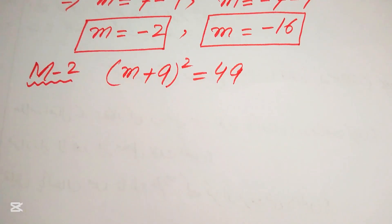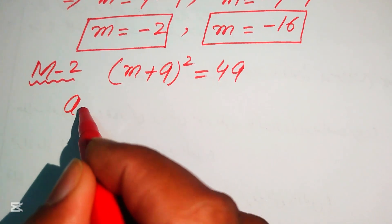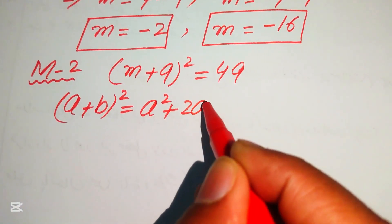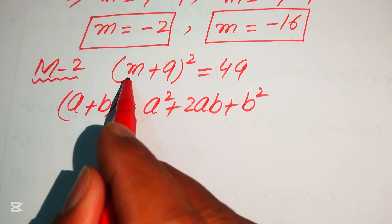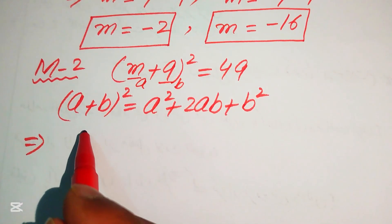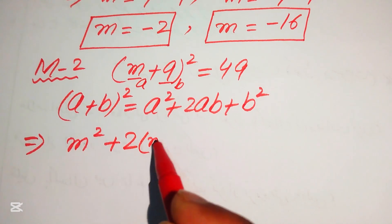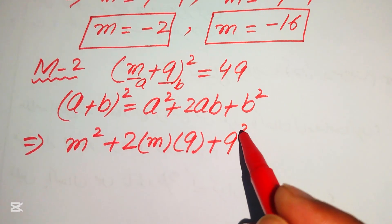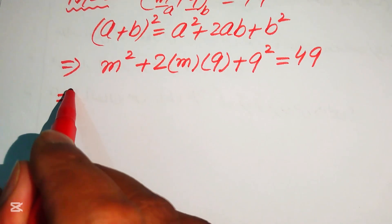In method two we expand the square on the left-hand side using the algebraic formula: (a + b)² = a² + 2ab + b². Here a = m and b = 9, so we expand to get m² + 2(m)(9) + 9² = 49.